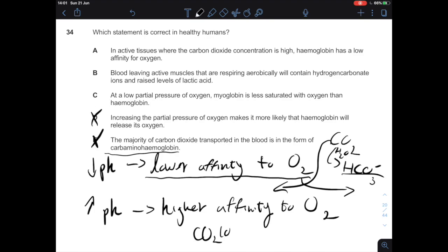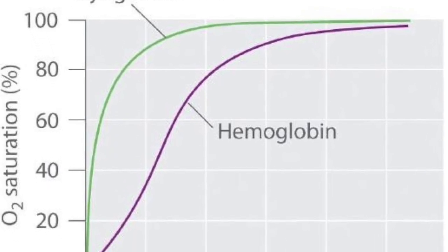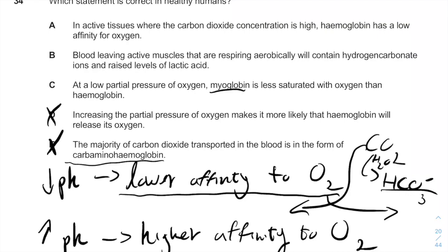At a low partial pressure of oxygen, the option states that myoglobin is less saturated with oxygen than hemoglobin — this is not correct. Myoglobin has a very high affinity for oxygen; it helps store and keep oxygen inside the muscles and releases it when the muscle needs it immediately for respiration. Because myoglobin has much higher affinity, at low partial pressure of oxygen we expect more saturated myoglobin than hemoglobin. So option C is not correct.